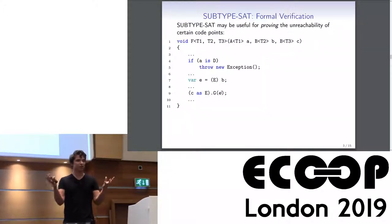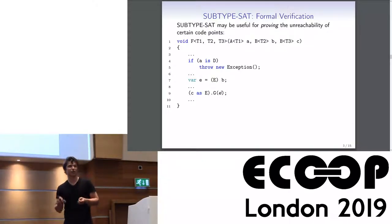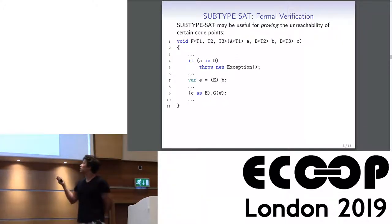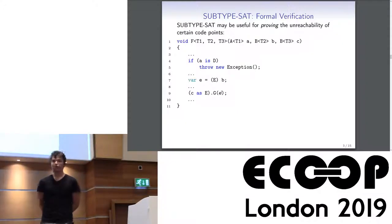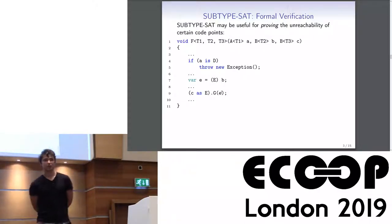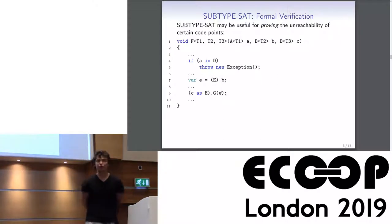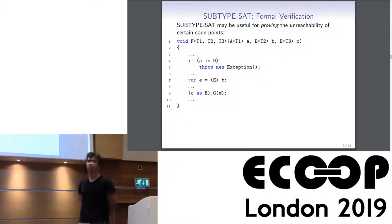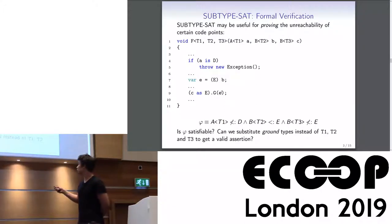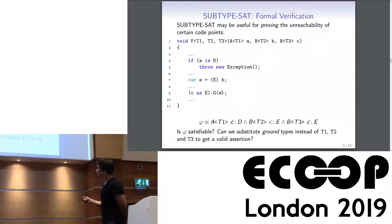Our main source of motivation is compositional verification of software. Suppose we have a C# function like in this example and we want to prove that some code points are unreachable — for example, that a line throwing a null reference exception is unreachable. We could write down a first-order formula over nominal types and ask if it is satisfiable.